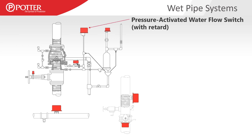Some of the different types of electronic devices we're going to address today include a pressure-activated water flow switch — in this case, a pressure switch with a built-in retard that allows the pressure to fluctuate throughout the day of a normal wet pipe system without activating the alarm. You also have pressure switch-based water flow switches that don't have a built-in retard, which would sit on top of a retard chamber to absorb those fluctuations.